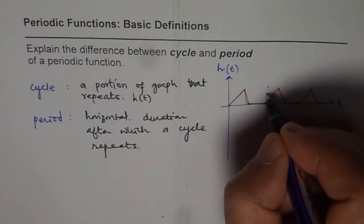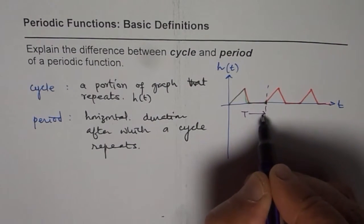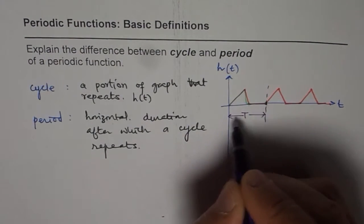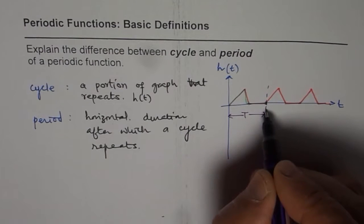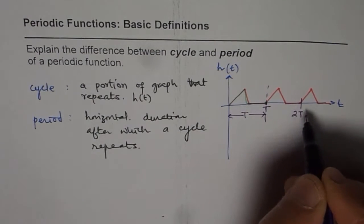Time period is a period, so after capital T, which I'm seeing, it repeats. So this becomes 2T. Do you see that? This is T, 2T, then the cycle repeats. So that is how cycle and period are related.